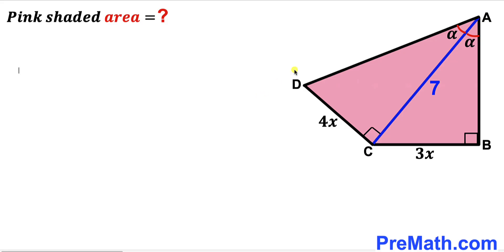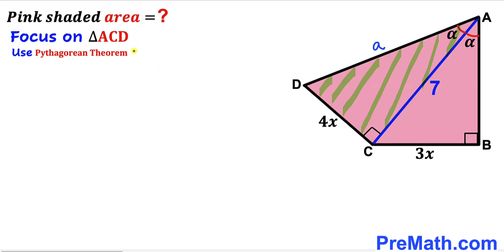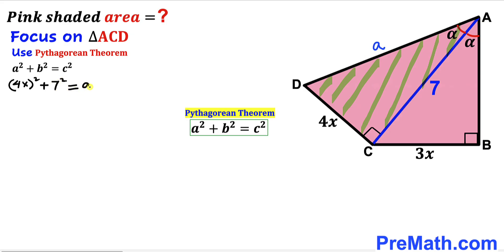Let's go ahead and get started. Now let's focus on this right triangle ACD. I'm going to label this side AD as lowercase a, and we are going to apply the Pythagorean theorem on this triangle. Here's our Pythagorean theorem: a² + b² = c². In our case, lowercase a is our hypotenuse whereas 4x and 7 are our other two legs. Let's go ahead and fill in the blanks in this formula, so we get (4x)² + 7² = a².